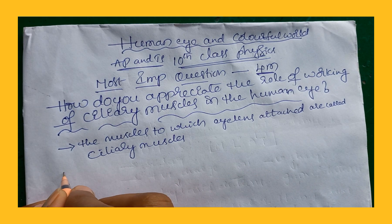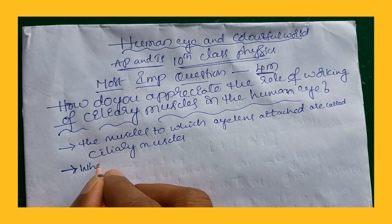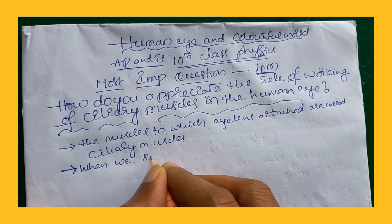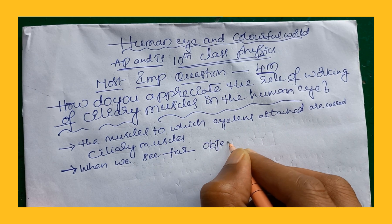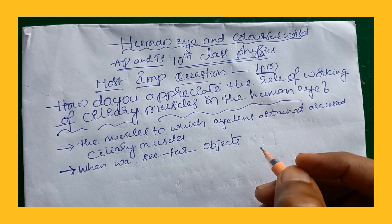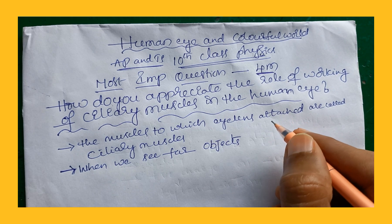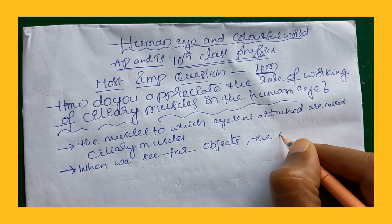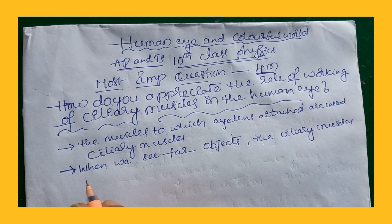These ciliary muscles help in adjusting the focal length of the eye lens. When we see far objects — distant objects which are at a distance more than the least distance of distinct vision, up to infinity, such as stars in the sky or birds flying in the air —